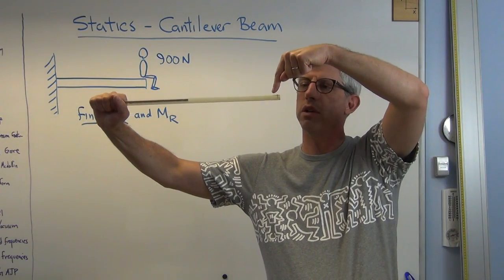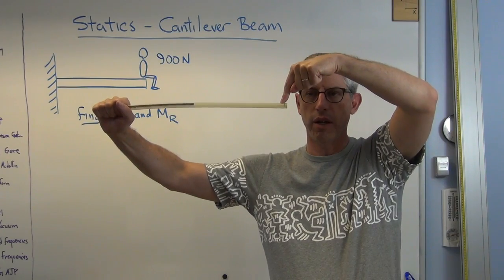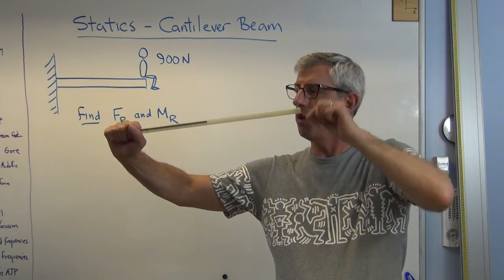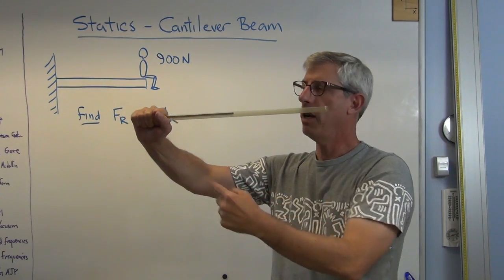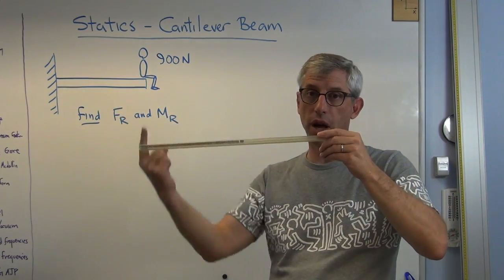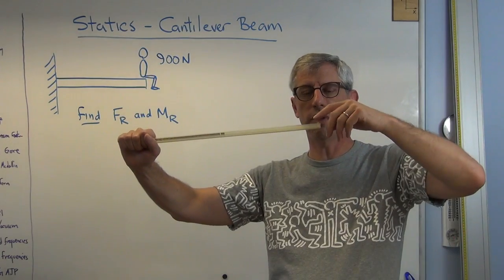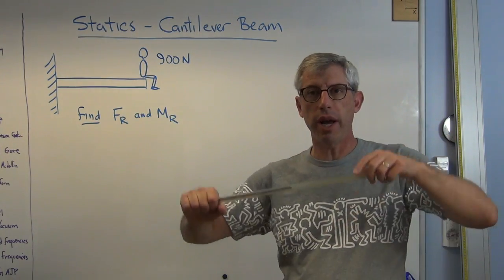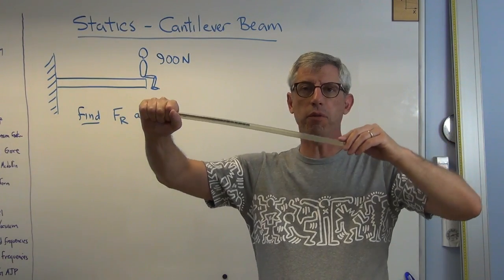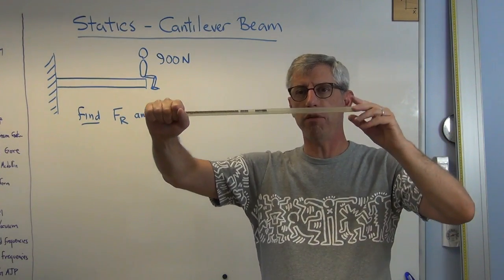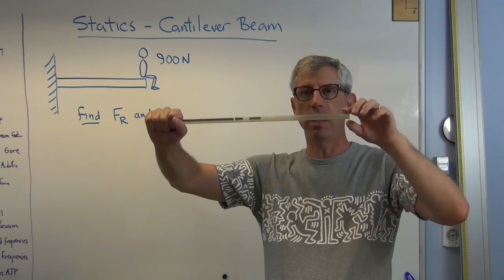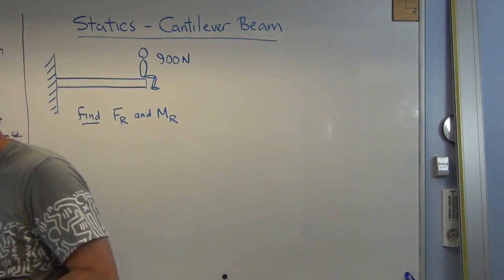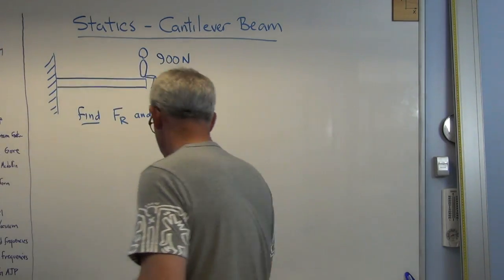If I'm going to push right there, put a load on there with this hand, two things have to happen over here. There has to be a force up to resist this load. That's the reaction force, and a reaction moment. That's something to keep it from twisting. I have to apply a moment at this end to keep the beam from doing that. That's the reaction moment. So that's what a reaction force and reaction moment are.